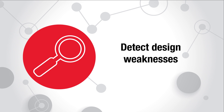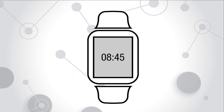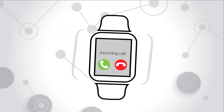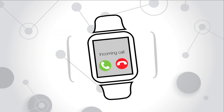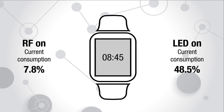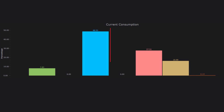Detect design weaknesses. Automatically correlate device power consumption with subsystem events, such as RF on and LED on, to easily identify which events consume the most current and therefore require optimization.